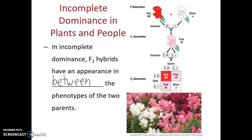So let's say you're a landscaper or a florist and you really want to have pink snapdragons. You should be starting with a red and a white snapdragon — that way all of the offspring will be pink. If you start with two pink snapdragons, only half of the offspring will be pink.